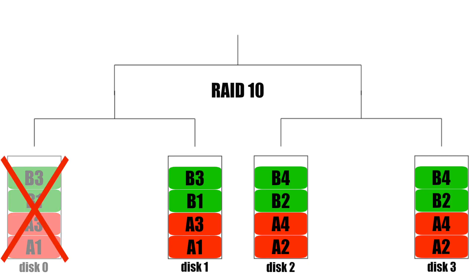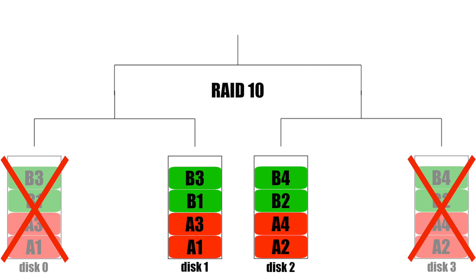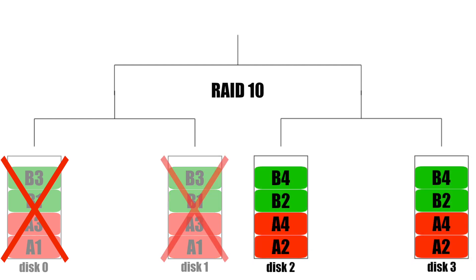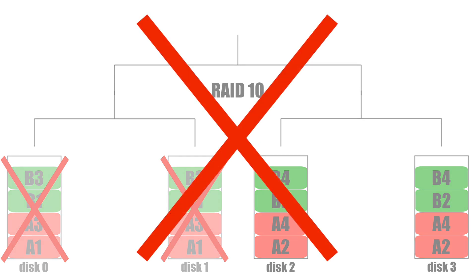If one drive fails then you will not lose any data. If a second drive fails then you have a 33% chance of losing your files. If a hard drive from the other RAID 1 array fails then you are fine. If all the hard drives in one of the RAID 1 arrays fail then you will lose your data.